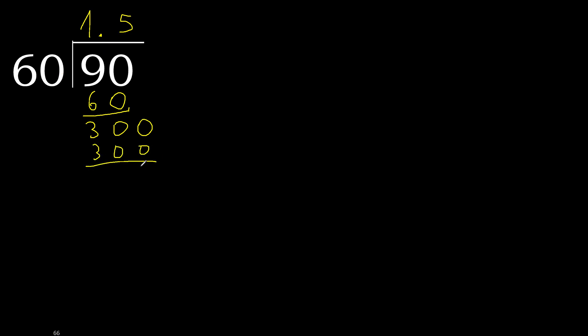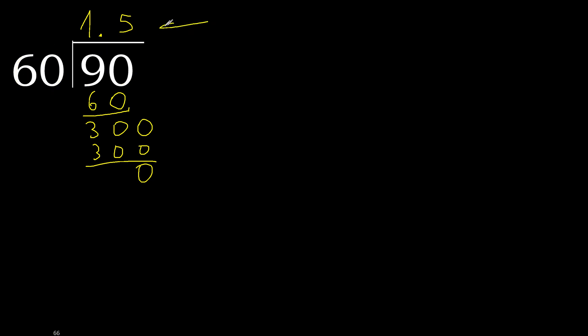300 is not greater. Subtract 0. 0, therefore finished. 90 divided by 60 is 1.5.